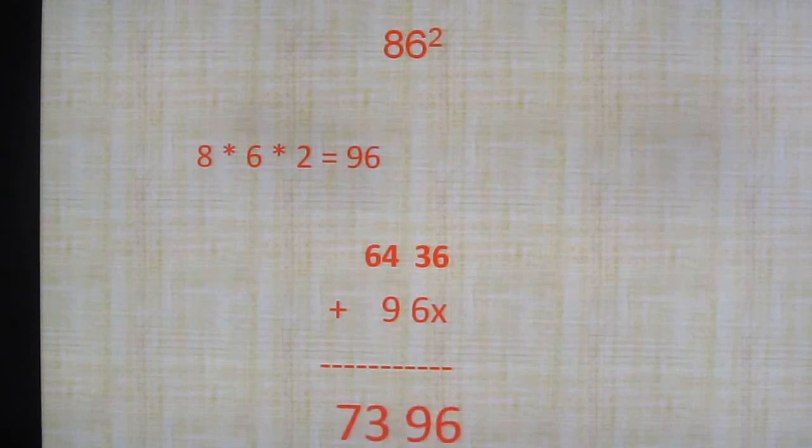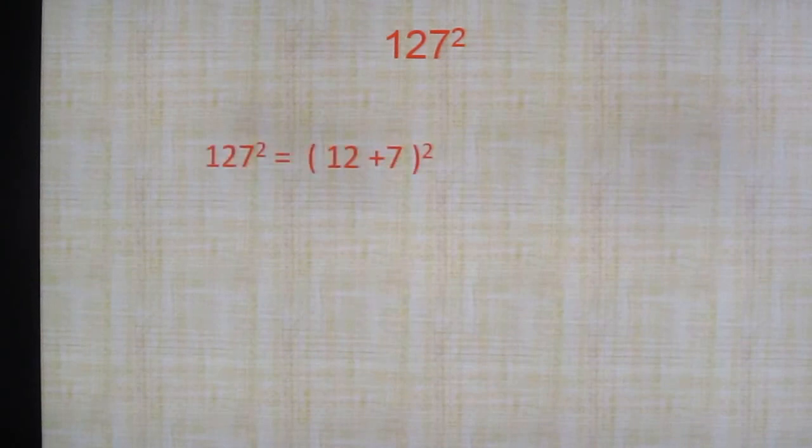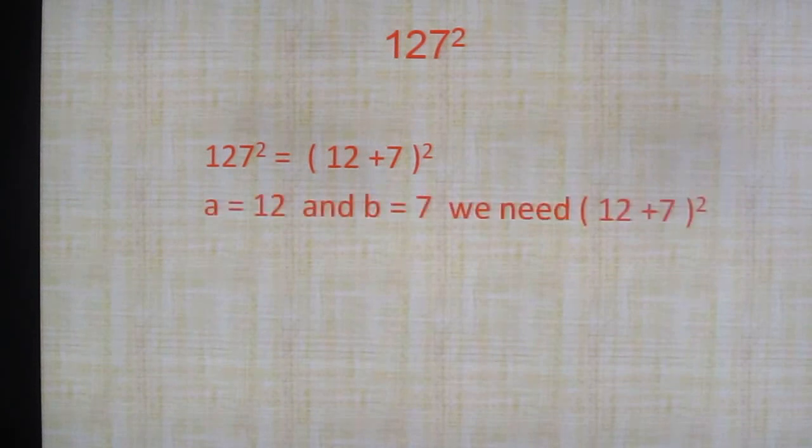Simple, right? Is this applicable when you go for a 3 digit number or a 4 digit number? Yes. Let's try for this question. 127 whole square. Hopefully this should be the last question for this slide. 127 square, I can write it as 12 plus 7 whole square. Or even I can write it as 1 plus 27 whole square. Why I have taken 12 plus 7 whole square? Because I know 12 square, I know 7 square. So just I am writing as A plus B whole square. What is A plus B whole square? A square plus B square plus 2AB. So here A equal to 12. B equal to 7. So we need 12 plus 7 whole square.